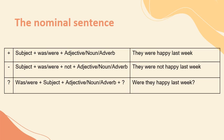Ada pun nominal sentence. Nominal sentence itu digunakan untuk adjective (kata sifat), seperti 'cantik', 'indah'; ada juga noun sebagai kata benda, contohnya 'driver'; dan juga adverb atau kata keterangan, contohnya 'in Bandung', 'in Jakarta', 'in my friend's house'. Contohnya: 'They were happy last week' — mereka senang minggu lalu. Mungkin minggu lalu mereka pergi berlibur. Jadi menggunakan 'were' karena ini dulu, minggu lalu.